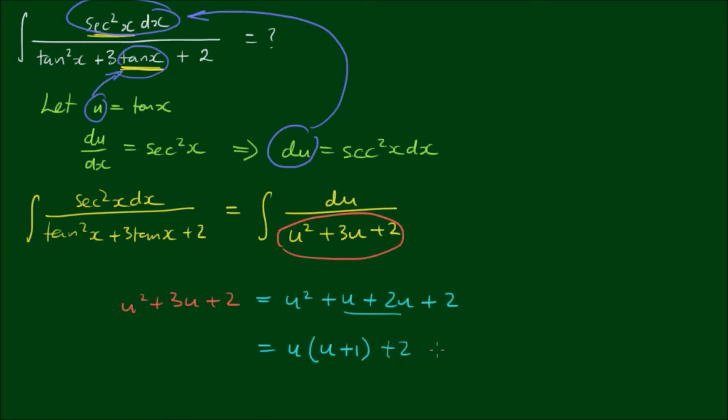And factoring a common u plus 1 again, we get u plus 2 by u plus 1. Alright, so I'll get rid of all this working.